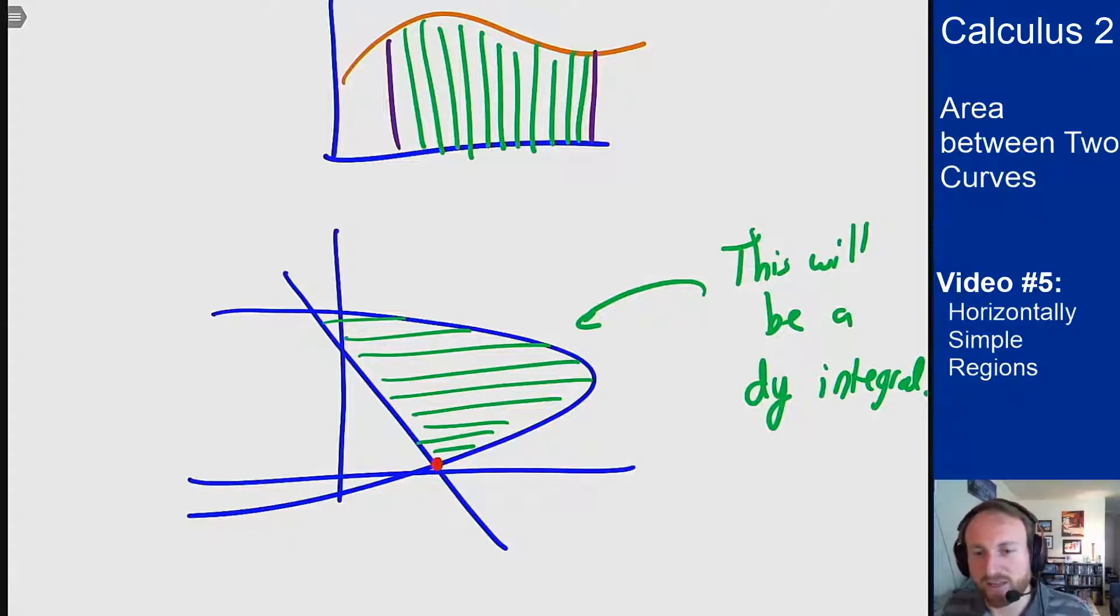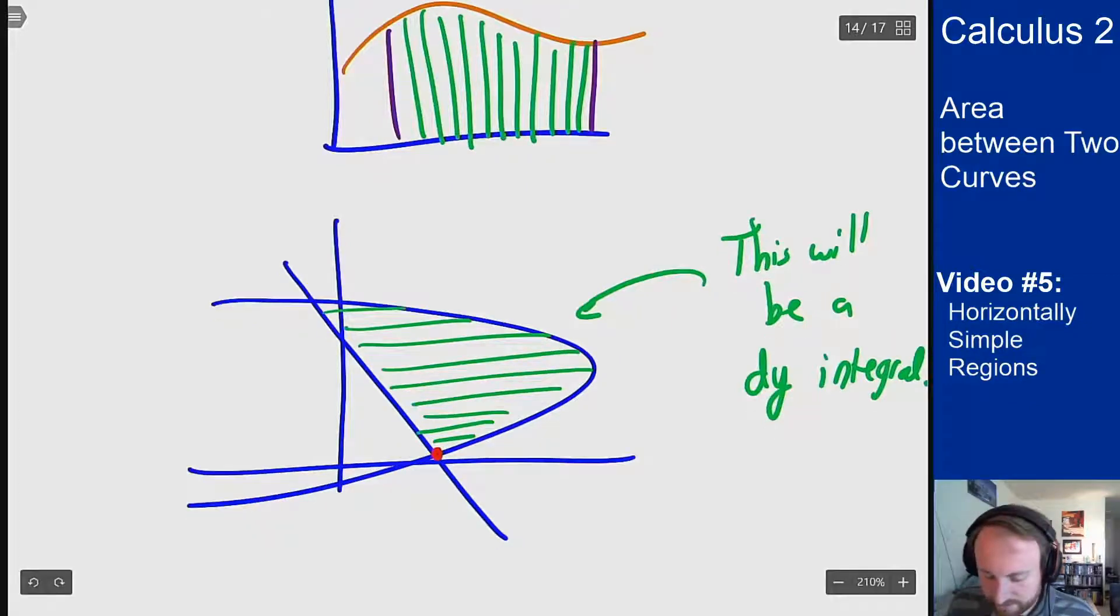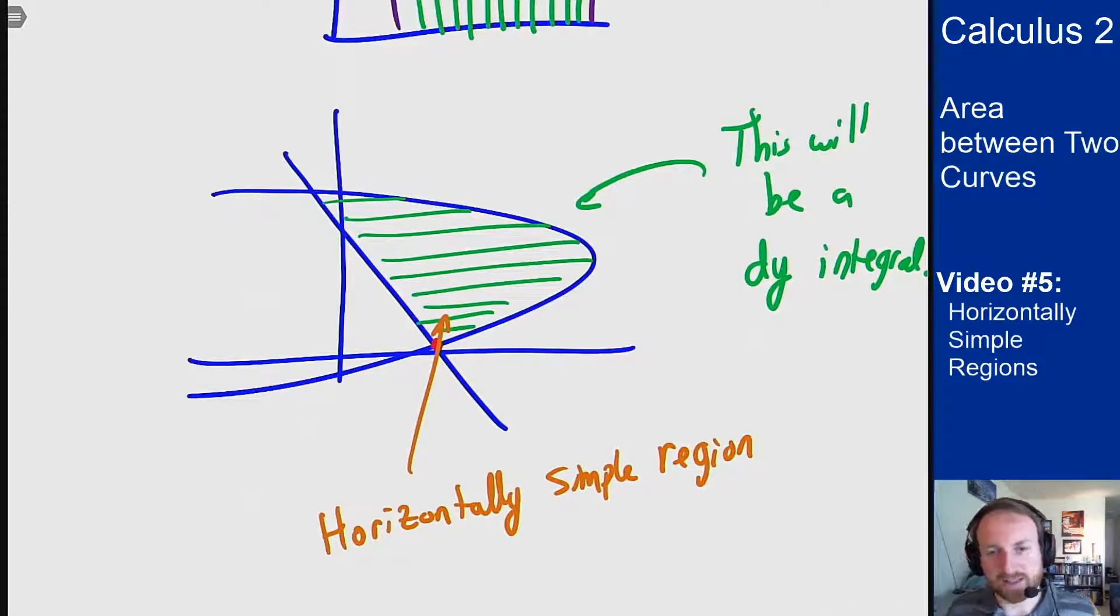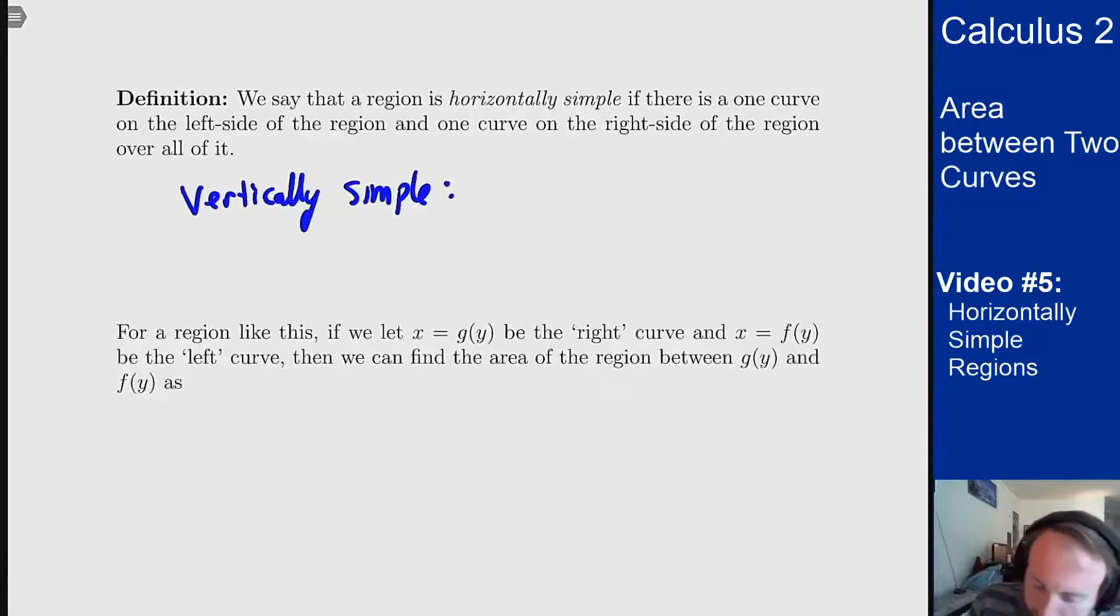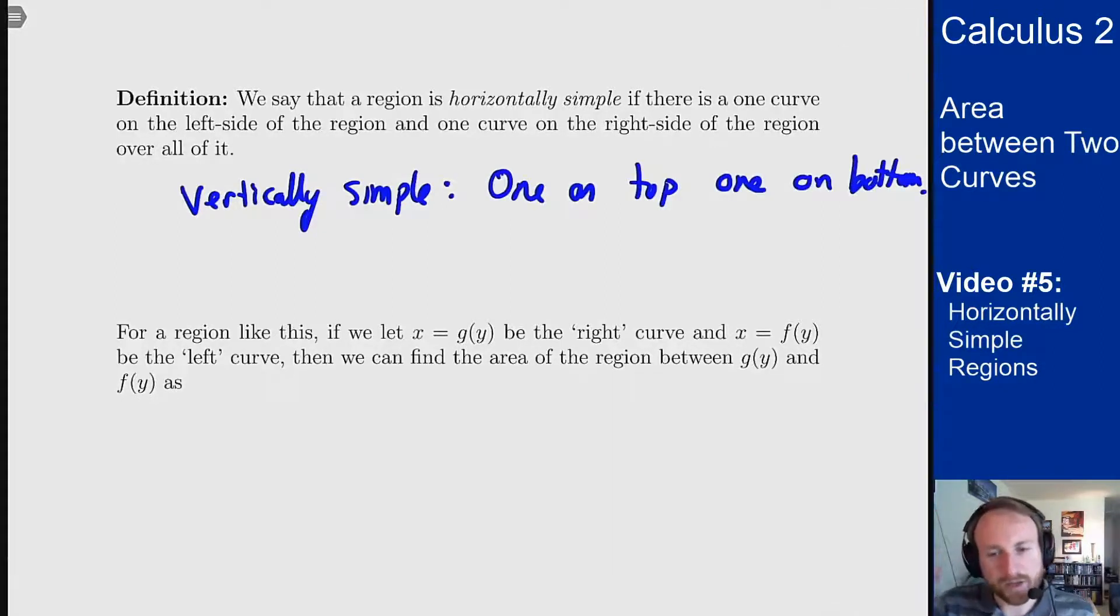In this case this region is actually really nice because this is what's called a horizontally simple region in that there is a single function on the right the entire time and a single function on the left the entire time. And that's going to make this one easier to do via a dy integral than a dx integral like we were doing for the rest of this section so far. So we say a region is horizontally simple if there's one curve on the left and one curve on the right the entire way. You want to think of this related to vertically simple which was one on top one on the bottom. And just like top and bottom are bounds in the y direction, right and left are bounds in the x direction. And so we're now thinking about this as bounds on x integral in y as opposed to before we had bounds on y integrals in x.